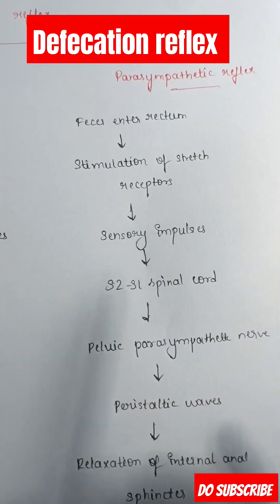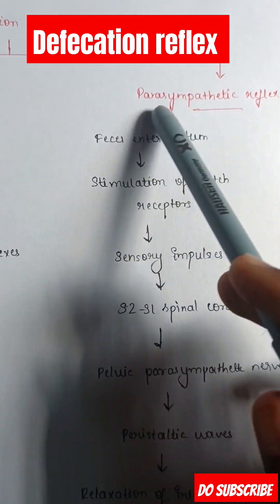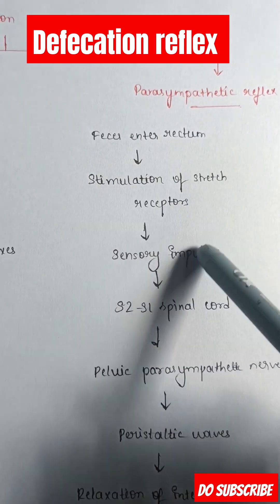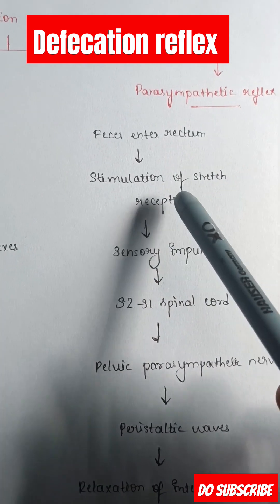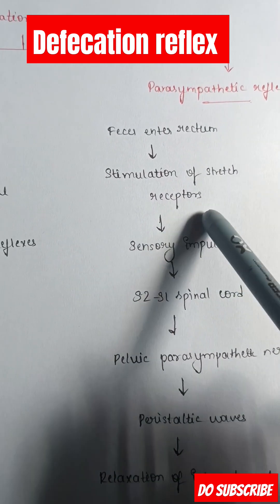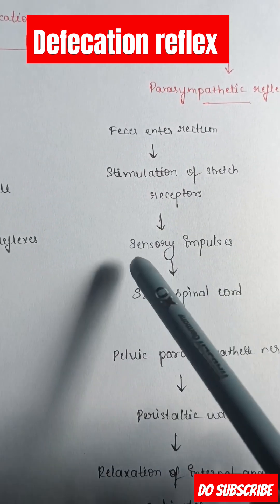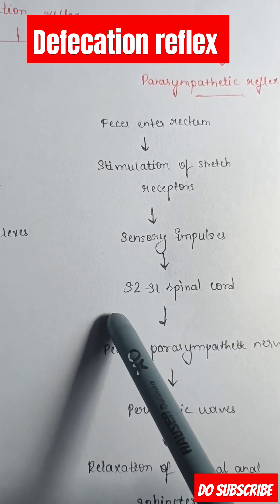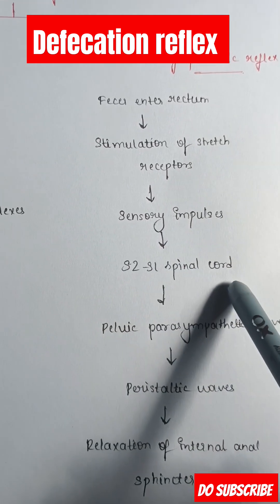Next, we'll see the parasympathetic reflex. First, feces enter the rectum. This causes the stimulation of the stretch receptors of the rectum muscles. This causes sensory impulses which are carried by S2-S1 spinal cord.